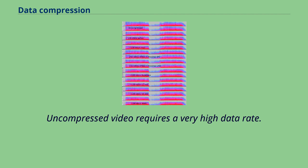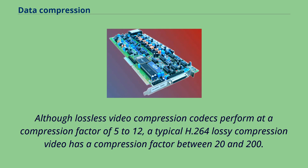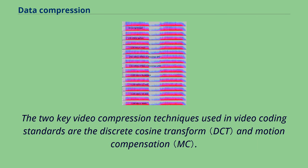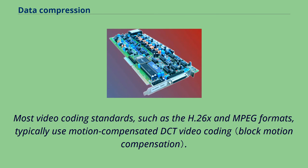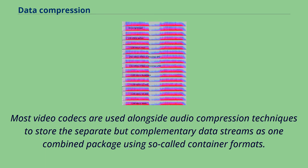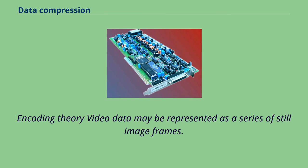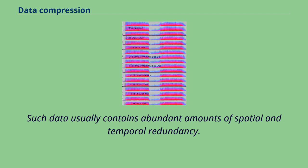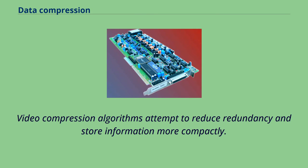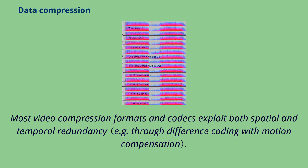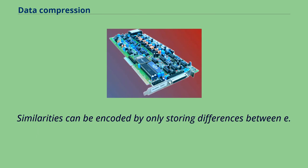Uncompressed video requires a very high data rate. Although lossless video compression codecs perform at a compression factor of 5 to 12, a typical H.264 lossy compression video has a compression factor between 20 and 200. The two key video compression techniques used in video coding standards are the discrete cosine transform and motion compensation. Most video coding standards, such as the H.26x and MPEG formats, typically use motion-compensated DCT video coding. Most video codecs are used alongside audio compression techniques to store the separate but complementary data streams as one combined package using container formats. In coding theory, video data may be represented as a series of still image frames. Such data usually contains abundant amounts of spatial and temporal redundancy. Video compression algorithms attempt to reduce redundancy and store information more compactly. Most video compression formats and codecs exploit both spatial and temporal redundancy. Similarities can be encoded by only storing differences between temporally adjacent frames or spatially adjacent pixels.